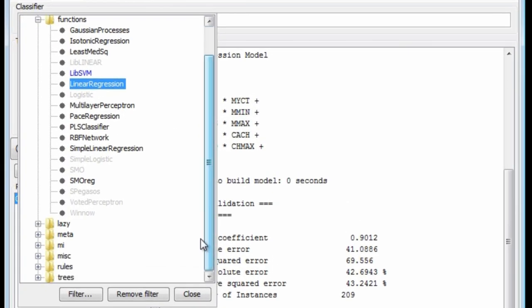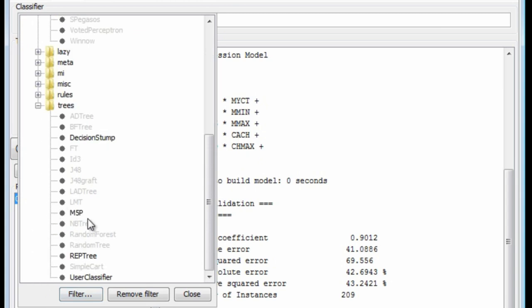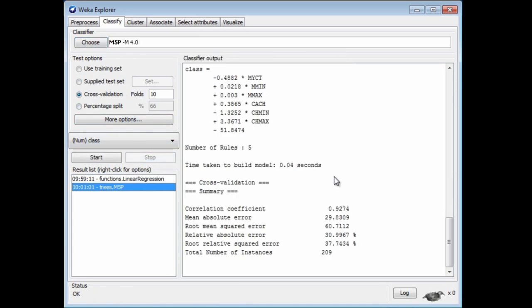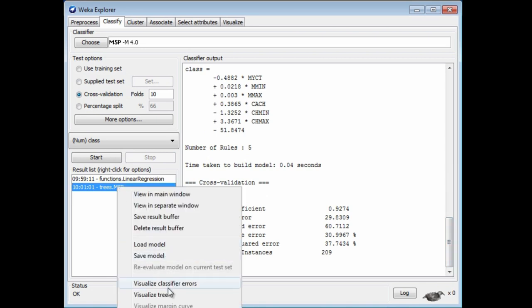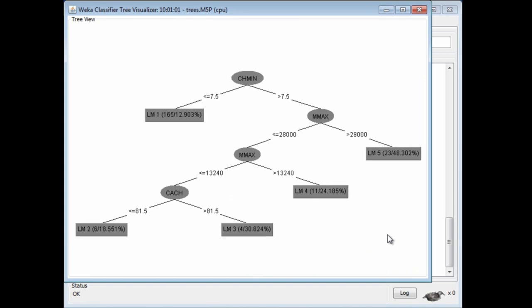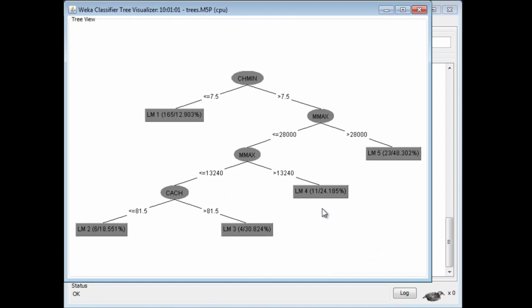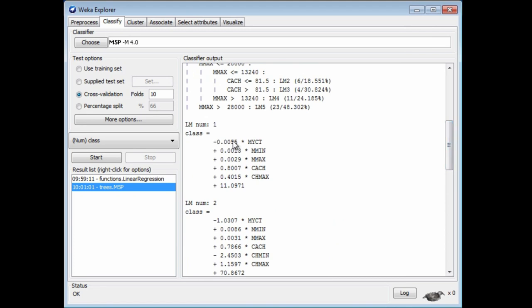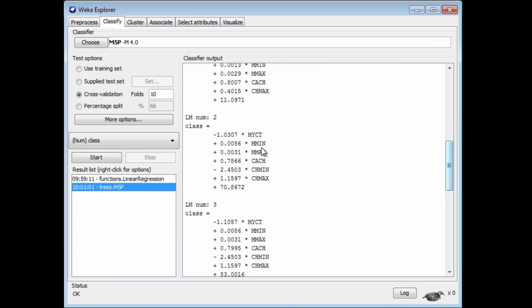There's a method under trees with a rather mysterious name of m5p. If we just run that, that produces a model tree. Maybe I should just visualize the tree here. Now I can see the model tree. It's similar to the one on the screen, on the slide. You can see that each of these, in this case 5, leaves has got a linear model, Lm1, Lm2, Lm3. If we look back here, the linear models are defined like this. Lm1 has got a formula, this linear formula for Lm1, this linear formula for Lm2, and so on.